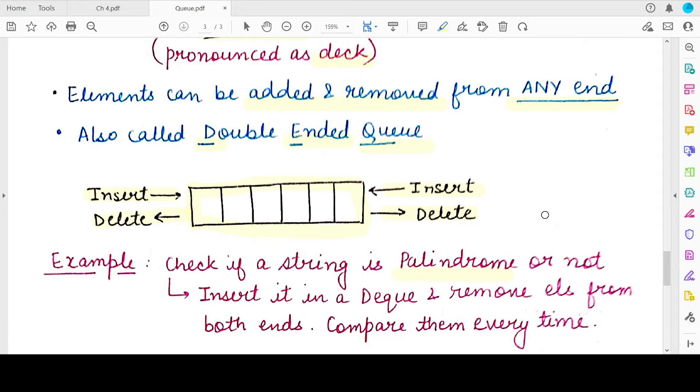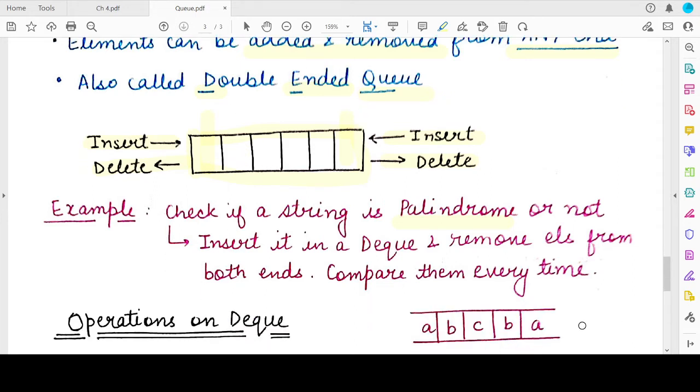For example, we have a string ABA. Then the first character and the last character are both A. Then we move to the next character from both the sides, we get a B. So any string read forward to backward or backward to forward when it reads exactly the same is known as a palindrome. Palindrome checking is very easy when you are using a deque because you insert the string that you want to check into a deque and then you keep on extracting elements from the front and from the rear and then you compare both the elements, then you extract the next two elements and compare.